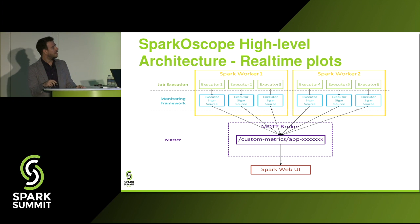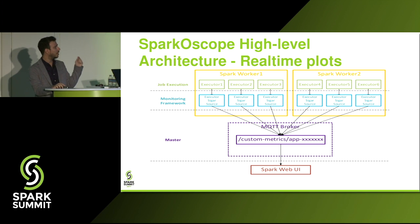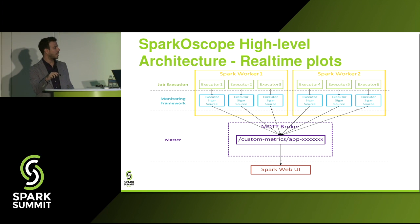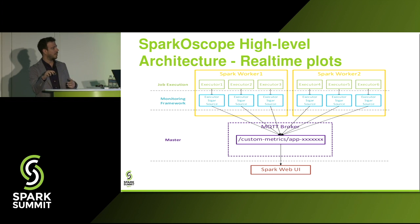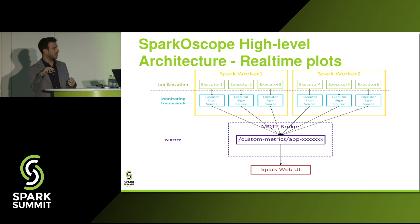In the case of real-time plots, we have an embedded MQTT broker at the master level. As the job is being executed, all metrics are sent to a specific MQTT topic — one MQTT topic per application — that the user can specify. By using WebSockets, we can plot all these available metrics on the Web UI in real time as your application is being executed.